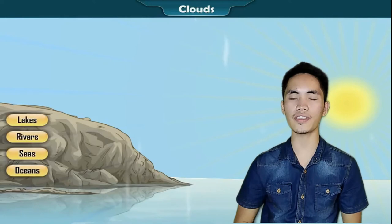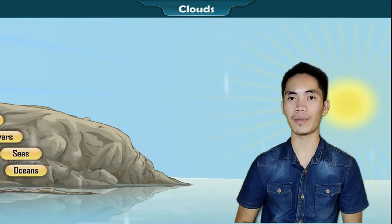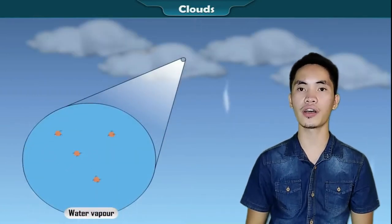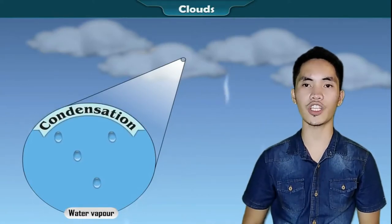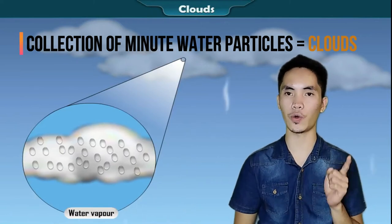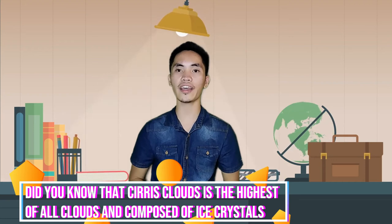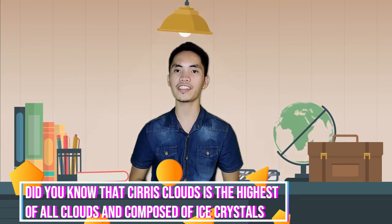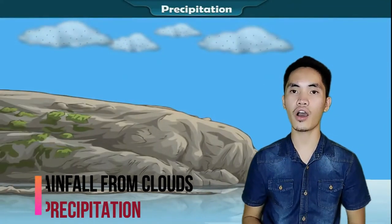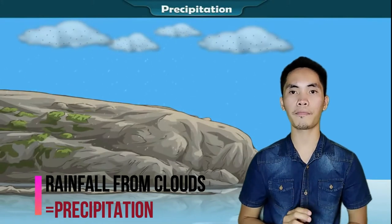Water from bodies of water like lakes, rivers, seas, and oceans evaporates due to the sun's rays and forms vapor, which mixes with the atmosphere. It rises higher and higher along with the air. Due to lower temperature at higher altitude, this water vapor converts into droplets around dust particles — a process known as condensation. These water particles float in the atmosphere, and a collection of such minute water particles is called clouds. Did you know that cirrus clouds are the highest of all clouds and are composed entirely of ice crystals? Wind moves the clouds from one place to another and we get rainfall — this is called precipitation.